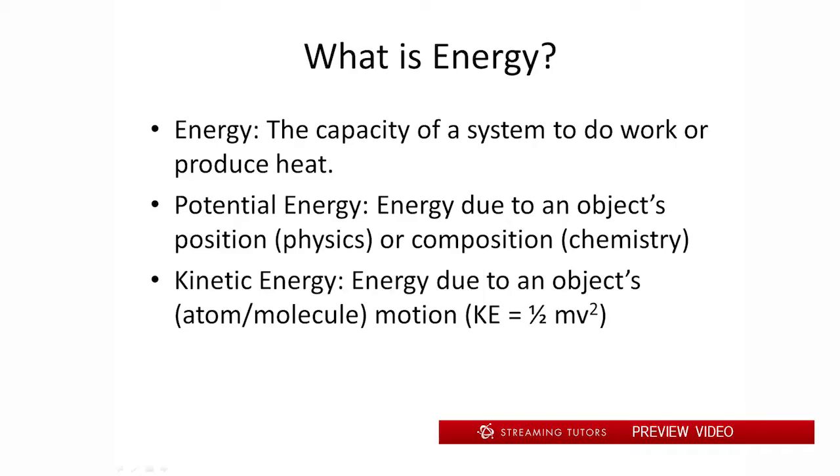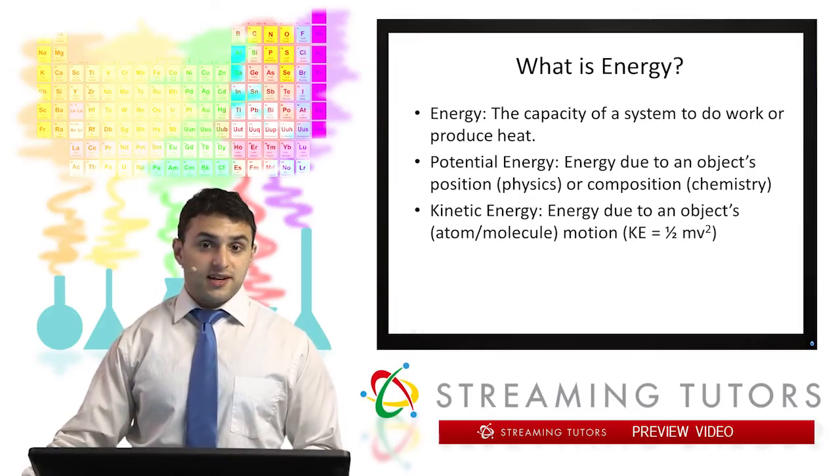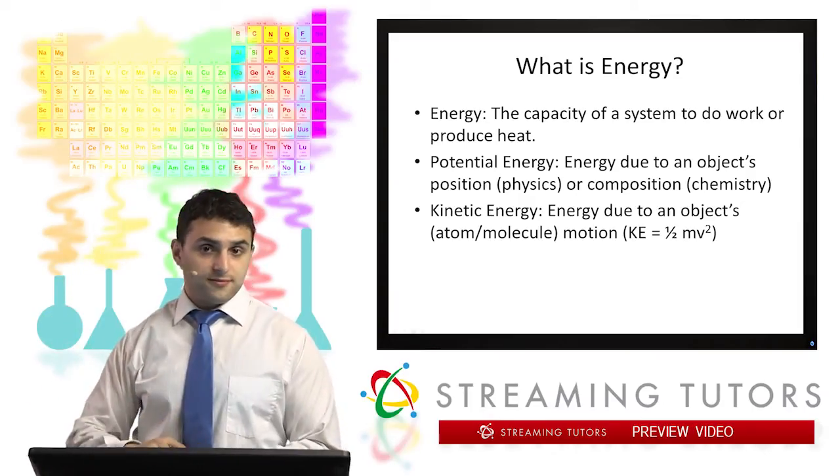Now the other type of energy is kinetic energy and that's due to an object's motion. It's given by the formula KE equals one-half mv squared. So kinetic energy depends on the mass of what's moving as well as its velocity. And that would just be if I took the mouse and threw it. I would be giving it kinetic energy of motion.